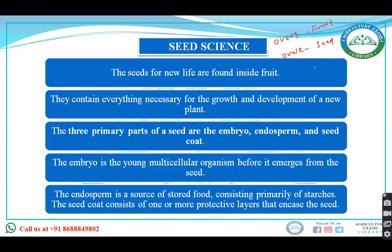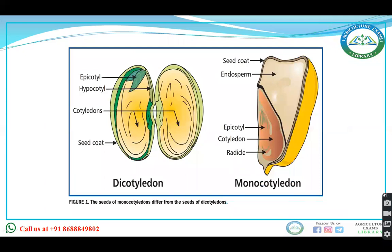The seed contains everything necessary for the growth and development of a new plant. Its three main parts are: embryo, endosperm, and seed coat. The endosperm is the source of stored food. Based on cotyledons, seeds are classified as monocotyledons (mainly cereals and grasses) and dicotyledons (mainly pulses). The embryo contains the epicotyl (immature shoot), radicle (immature root), and hypocotyl (transition region between root and epicotyl). The cotyledon is the first leaf of the embryo and also stores food.